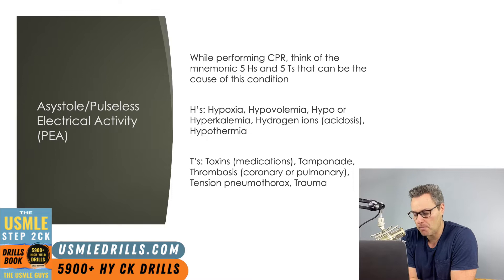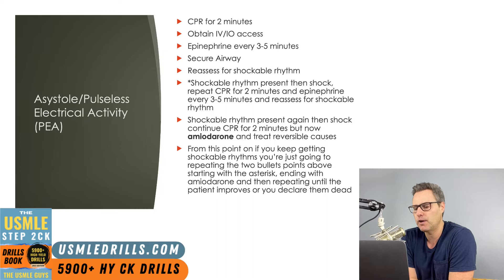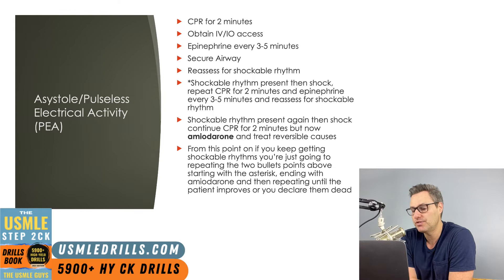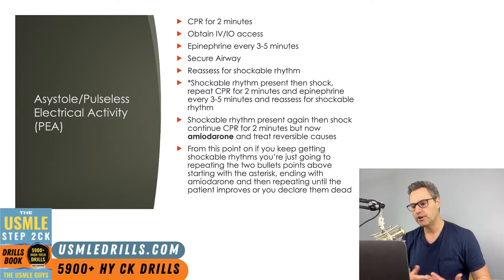Here's a slightly different scenario: you've done the initial steps, and the first rhythm is PEA or asystole. You continue two minutes of CPR, get IV or IO access, give epinephrine every three to five minutes, secure the airway, and reassess the rhythm. If the rhythm is now shockable, give the patient a shock and continue CPR and epinephrine. If you reassess again and the rhythm is still shockable, you'll shock, continue CPR, but now give amiodarone — that's the big difference the second time around.